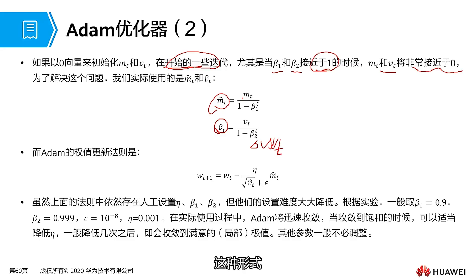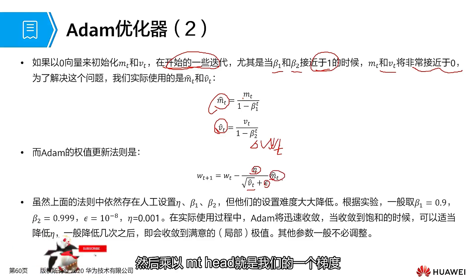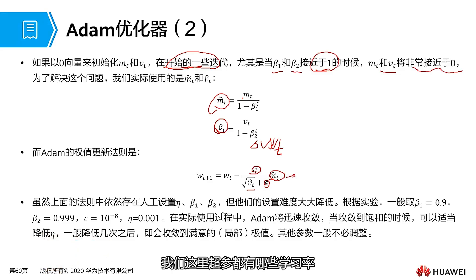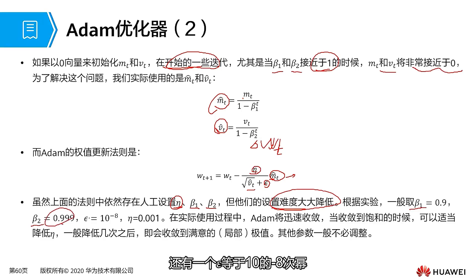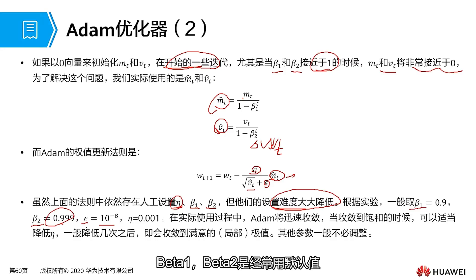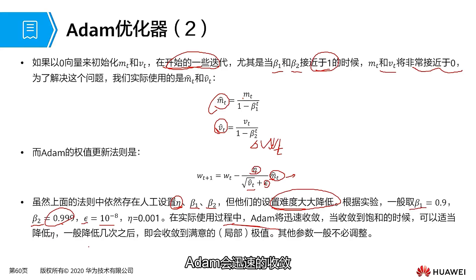The global learning rate beta1 and beta2 setting difficulty is significantly reduced based on experiments and experience. Beta1 is typically 0.9, beta2 is typically 0.999, epsilon is 10 to the power of -8, and learning rate is 0.001. However, in actual operation, beta1 and beta2 are often used with default values. Adam will quickly converge. When it converges to saturation, it can reduce our learning rate. Generally after lowering it a few times, it will converge to extrema. If there is a local value, performing another iteration replacement will break out of our local extremum problem. Other parameters don't need too many adjustments.